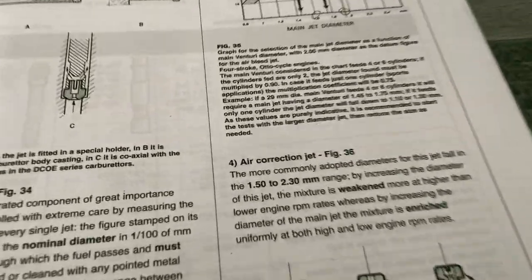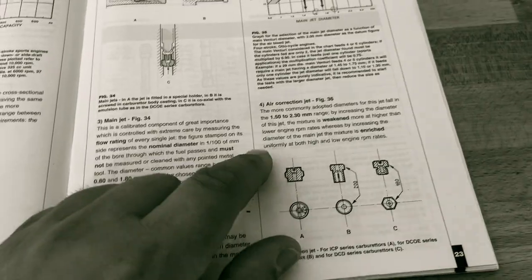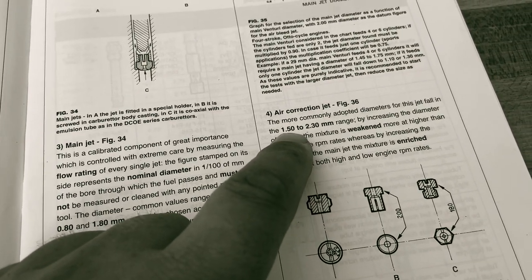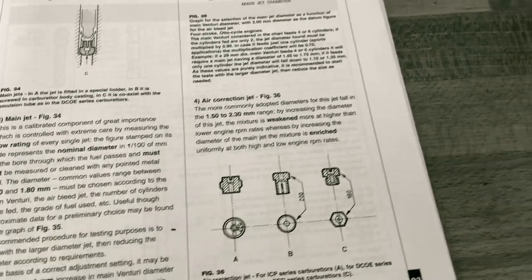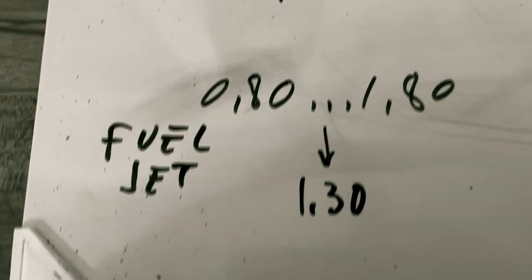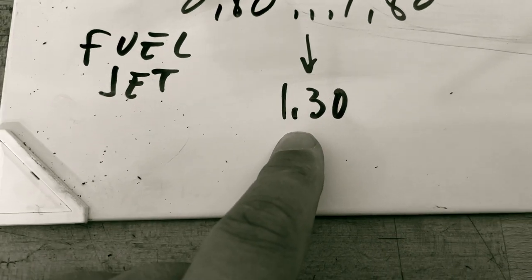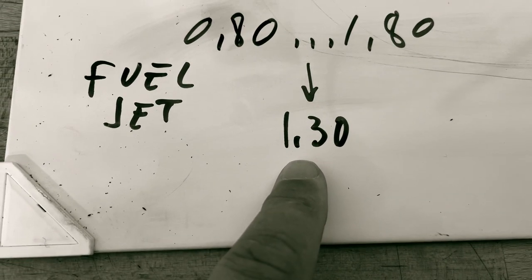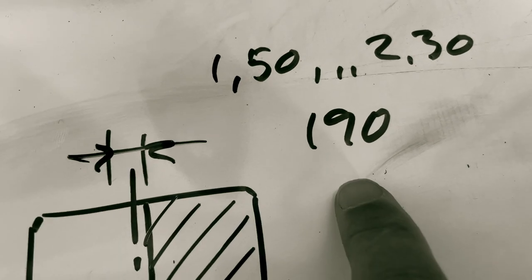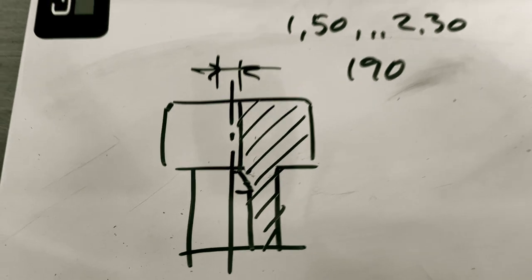And then we have the air correction jet. Mr. Weber doesn't say anything about picking the size, but it does say the common range is between 1.5 and 2.3mm. If I take our fuel jet decision from before, the common range was 0.8 to 1.8mm and we chose 1.3mm - that's right in the middle of the range. If I take that range of 1.5 to 2.3mm, right in the middle would be 1.90 or 1.9mm. So that's what I'll stick with.